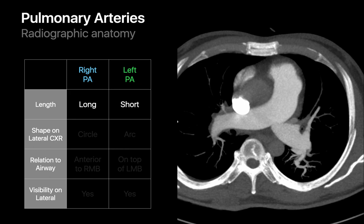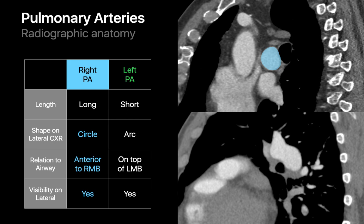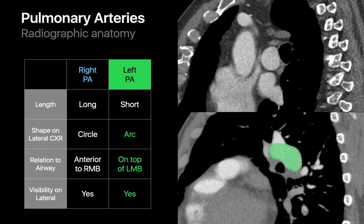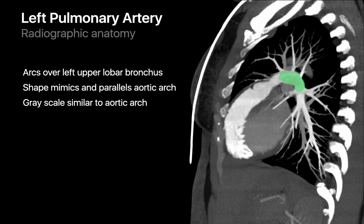The right and left pulmonary arteries appear differently on a lateral chest radiograph because of their different anatomy. Not only is the right pulmonary artery longer than the left, the anatomy of both from a lateral vantage point differs too. The right pulmonary artery appears circular in cross-section, situated immediately anterior to the right main stem bronchus, while the left pulmonary artery appears more arc-like or kidney bean shaped and sits immediately on top of the left main stem bronchus.